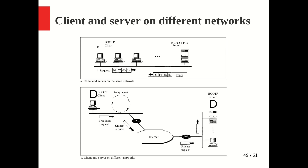If the client and server are on the same network, it works straightforwardly. The BOOTP request message has source IP set to all zeros and destination IP set to all ones, since it is a broadcast message. When both the BOOTP client and server are on the same network, the client simply generates the BOOTP request and the server responds.